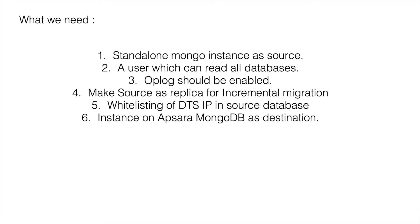You can think of oplogs as binary logs in MySQL. For incremental migration, we need to create the source database as a replica so that incremental migration can be made available. Then we need to whitelist the IPs of the DTS in the source database so that DTS can take data from the source and send it to the destination database. Finally, we need a MongoDB instance on the destination — we'll create one on the cloud so we have the destination database as well.